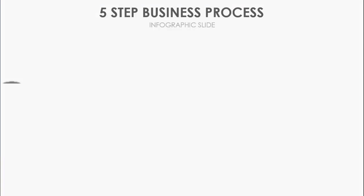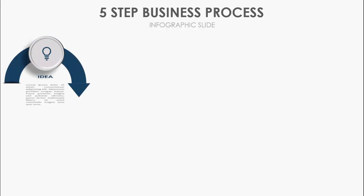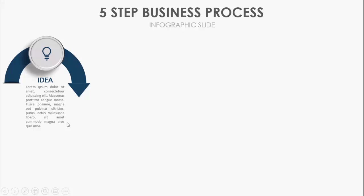In today's tutorial I'm going to show you how to create a five steps business process animated slide in PowerPoint. This is how the slide works: when I click, the first semicircle comes — you can see the arrow here with the circle and the icon. I have just put the idea, and you can add some detailed text here.